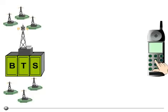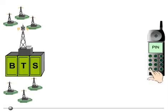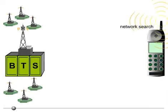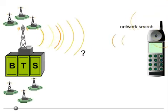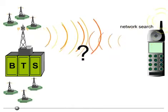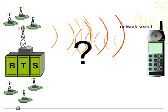After the subscriber has switched on his mobile station and typed in his PIN code, the mobile station searches for a network. But how does it log on to the network the subscriber is registered with?